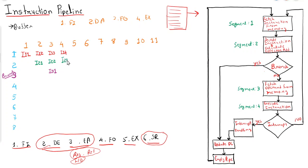After completion of that segment, in the next cycle we decide whether there is a branch or not. Instruction 1 completes and leaves the pipeline. Instruction 2 moves to the fourth segment, instruction 3 moves to the third segment, and instruction 2 is already done.